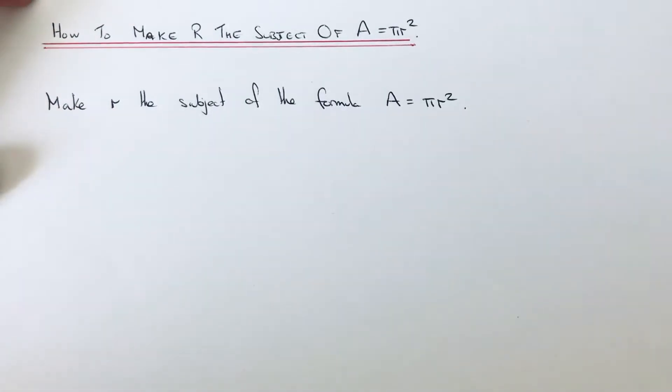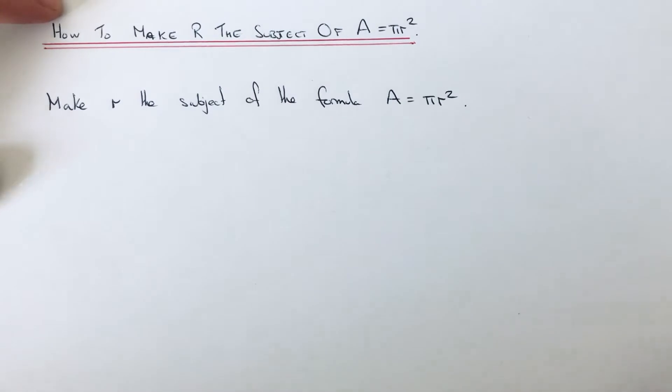Hi guys, welcome back. This is Maths3000. Today I'm going to show you how to make R the subject of the formula A equals pi R squared, which is used to calculate the area of a circle.